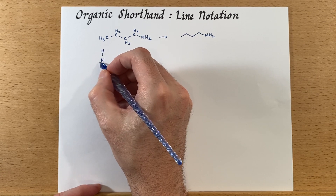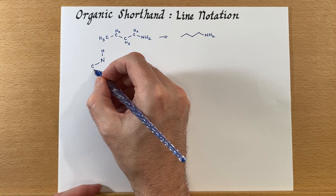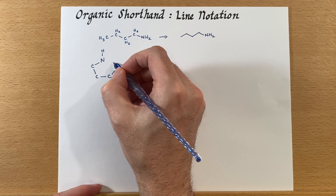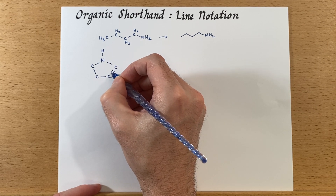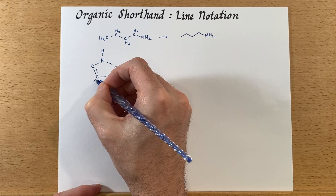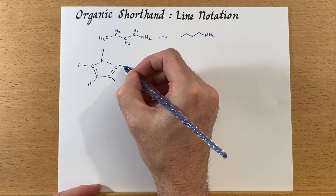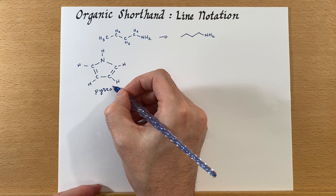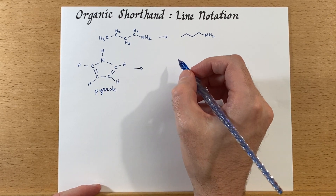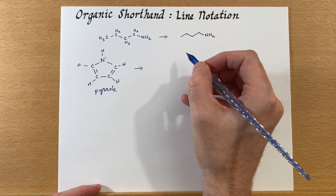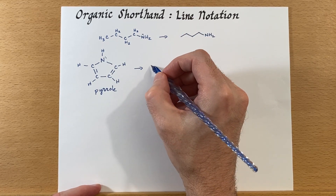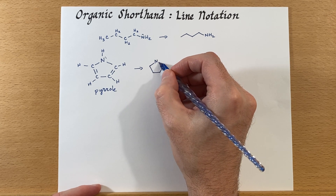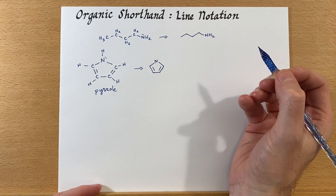I'm going to draw up another example: pyrrole. Here's pyrrole — and I forgot the lone pair there. This simplifies down into a very easy to draw five-membered ring, like so.